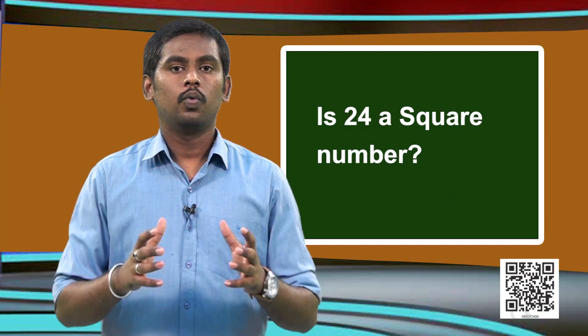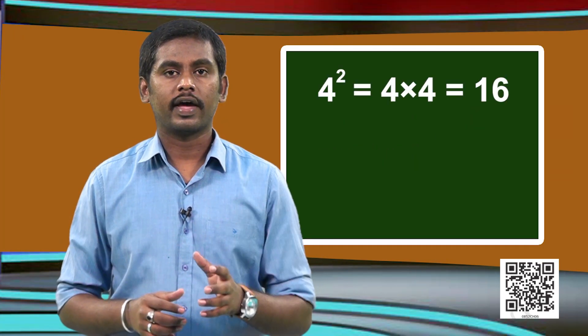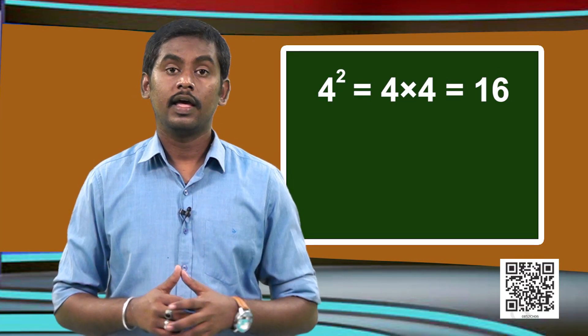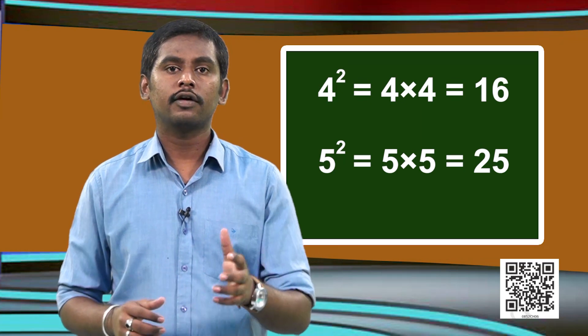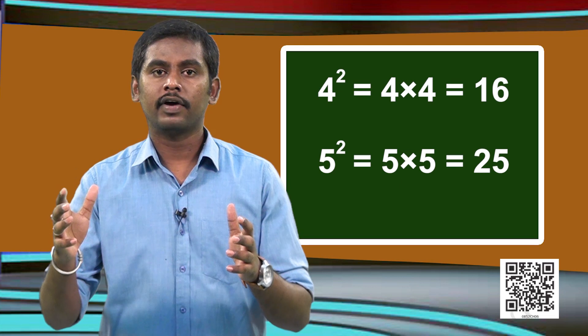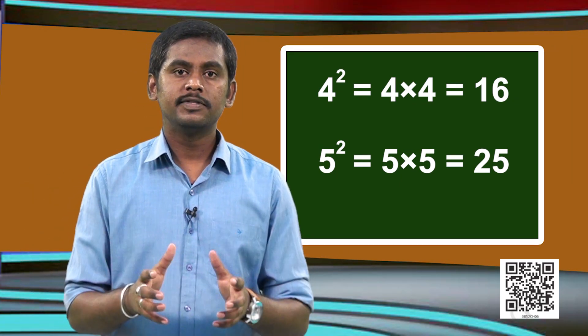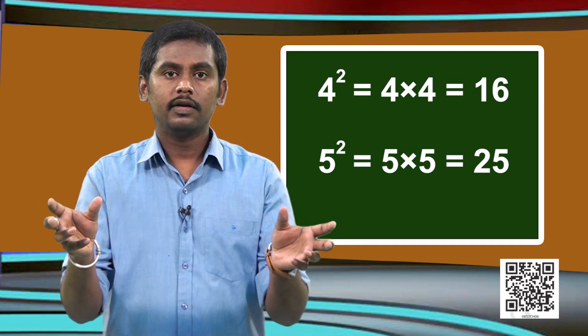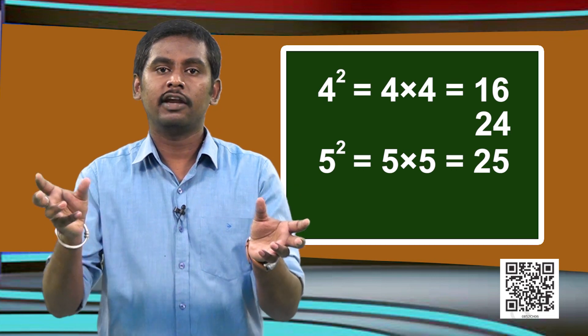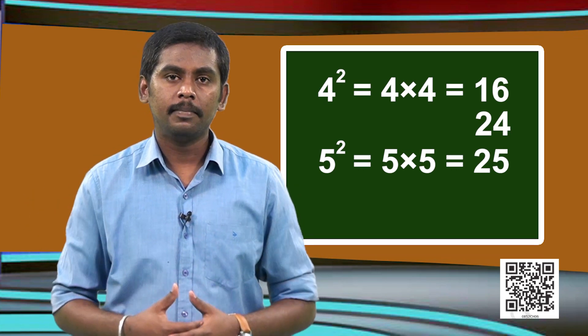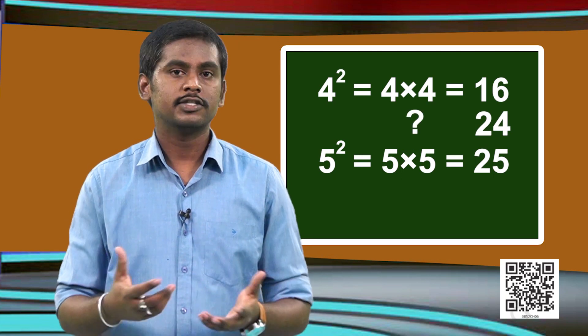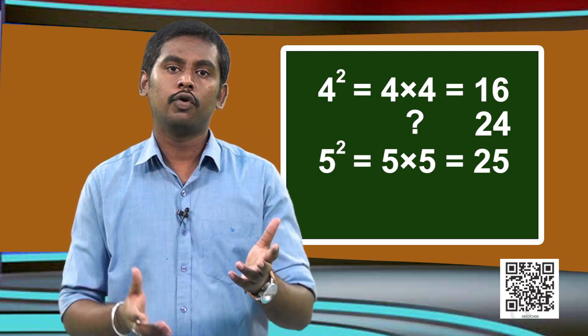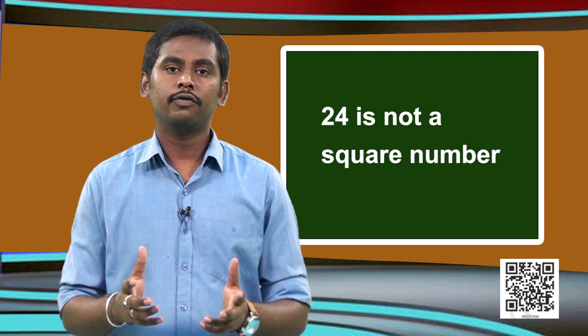Let us check whether a number is a square number or not. Let us find whether 24 is a square number. We know that 4 squared is 16, and 5 squared is 25. We observe that 24 lies between 16 and 25. But there is no integer between 4 and 5, so there is no integer whose square is 24. Therefore, 24 is not a square number.